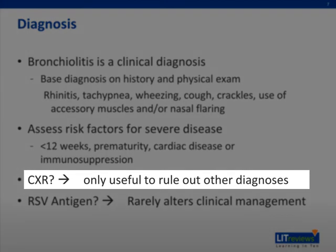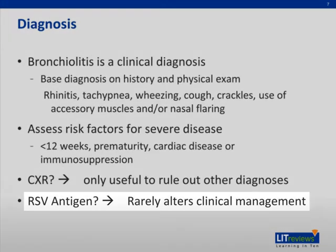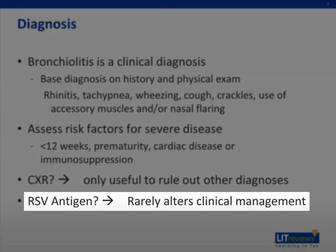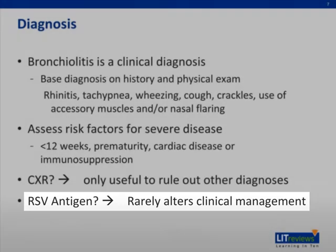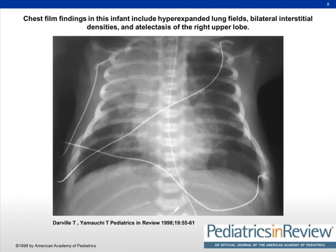Chest x-rays are only useful to rule out other diagnoses if you're considering other processes like pneumonia or asthma. An RSV antigen may be sent, obtained from a nasal swab, but it rarely alters the clinical management of your patient. To demonstrate a chest x-ray for bronchiolitis, you can see there are nonspecific bilateral densities and some atelectasis in the right upper lobe.